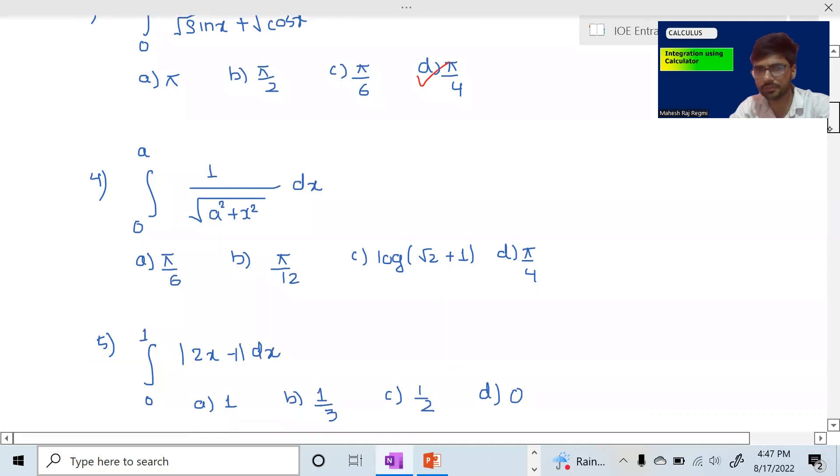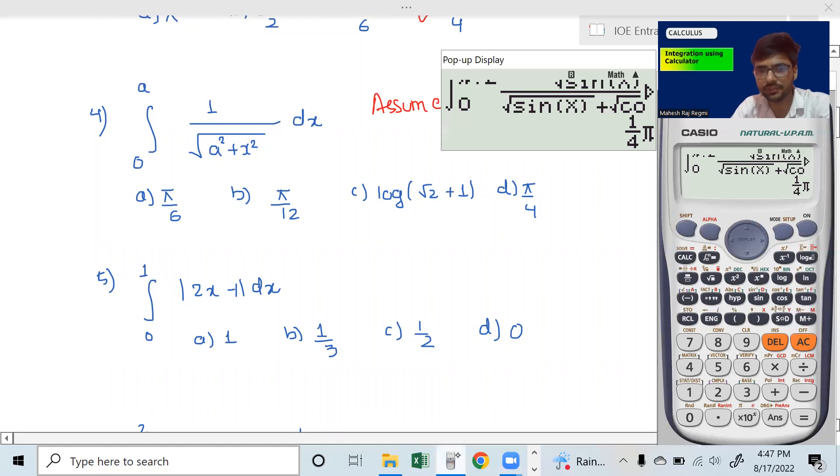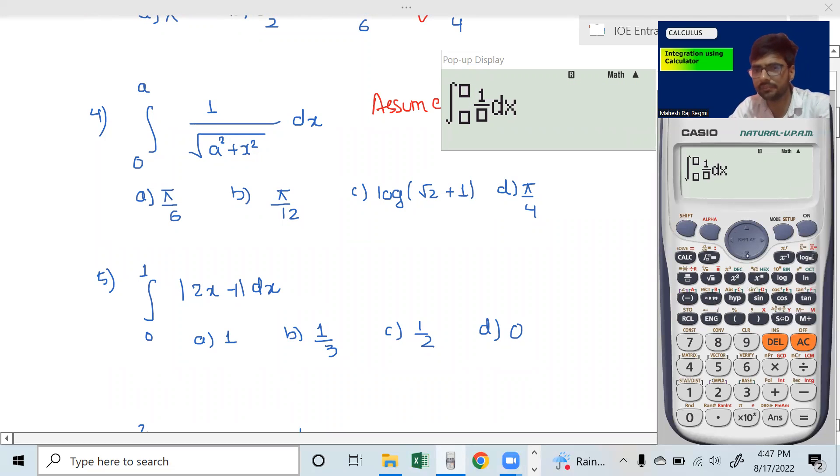Now we have a value in this. Here we have a value in this, so we have a common value. 1 divided by root under 2 squared, 2 squared plus x squared.